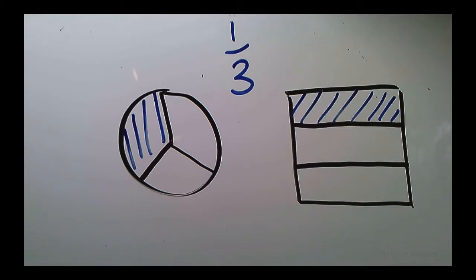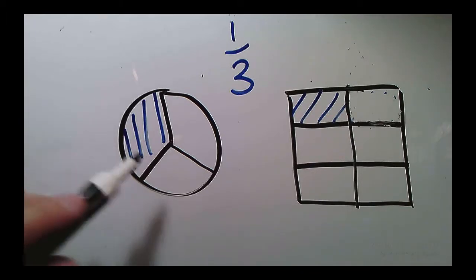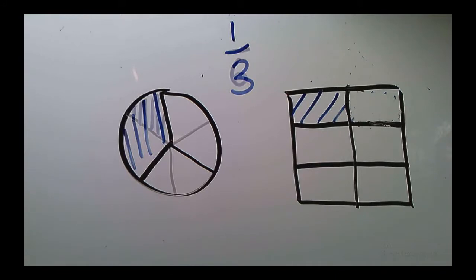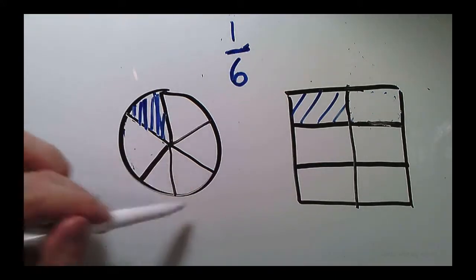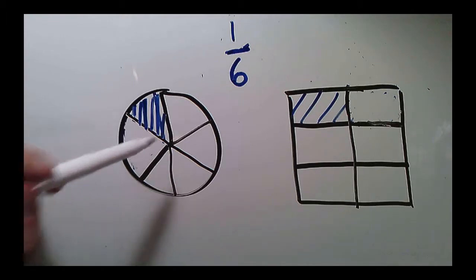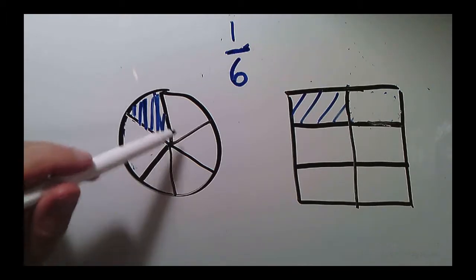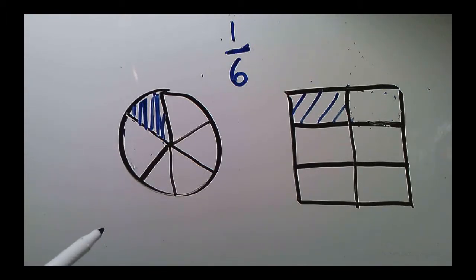Now, to show 1 sixth, it's pretty simple on my rectangle. I just do one cut down the middle. My circle is a little bit more complicated, so I have to cut each of my three pieces equally in the circle, but I still have a pretty good way to get equal size pieces for 1 sixth.